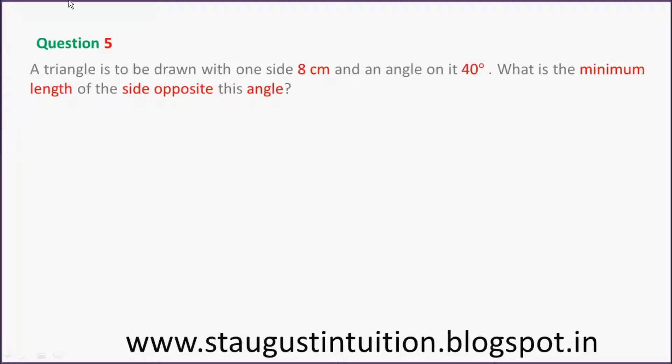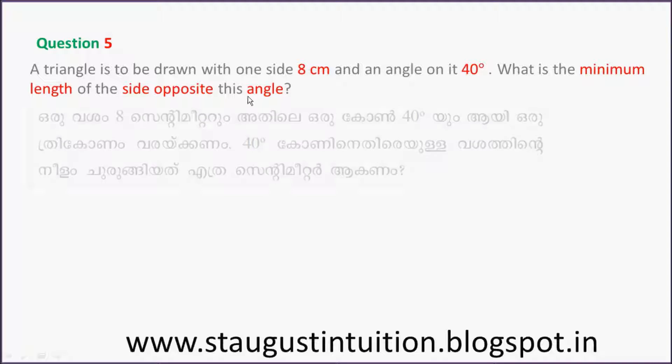Question number 5: A triangle is to be drawn with one side 8 cm and an angle of 40 degrees. What is the minimal length of the side opposite this angle?